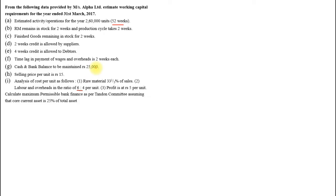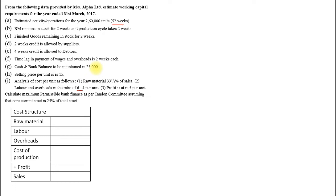Whenever you get such a sum, the very first thing you need to prepare are two working notes. Number one is based on your cost structure. Selling price is 15 rupees. Raw material is 33 and one-third percent of sales, so 15 into 33.33% equals 5 rupees. Profit is 5 rupees per unit. So: what plus 5 gives you 15? The answer is 10 — cost of production is 10 rupees.